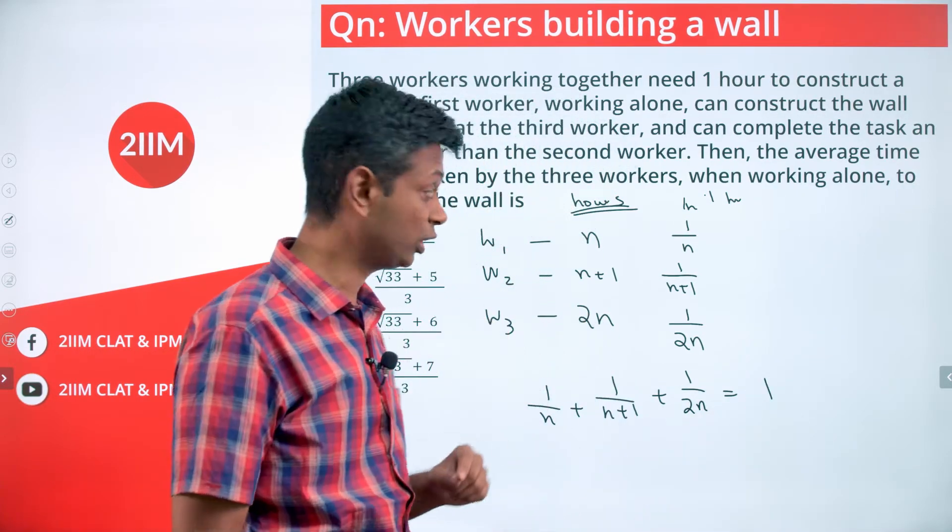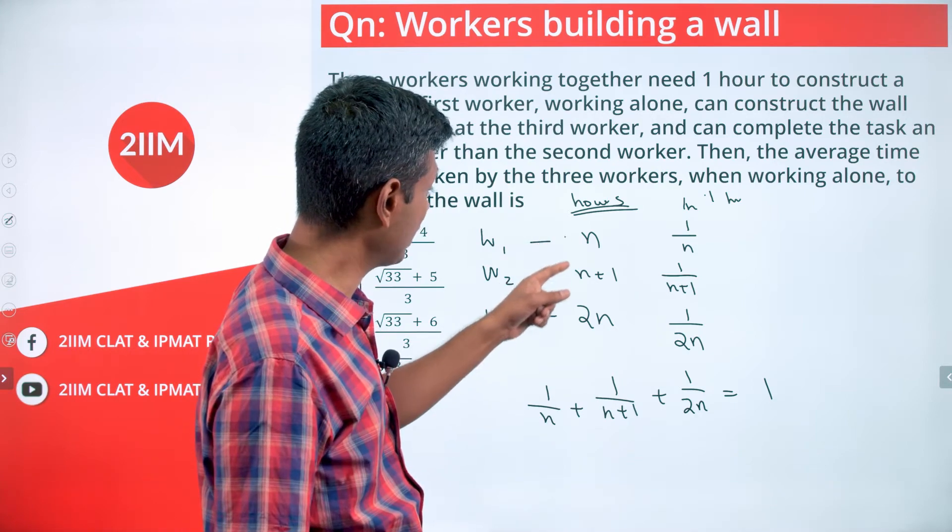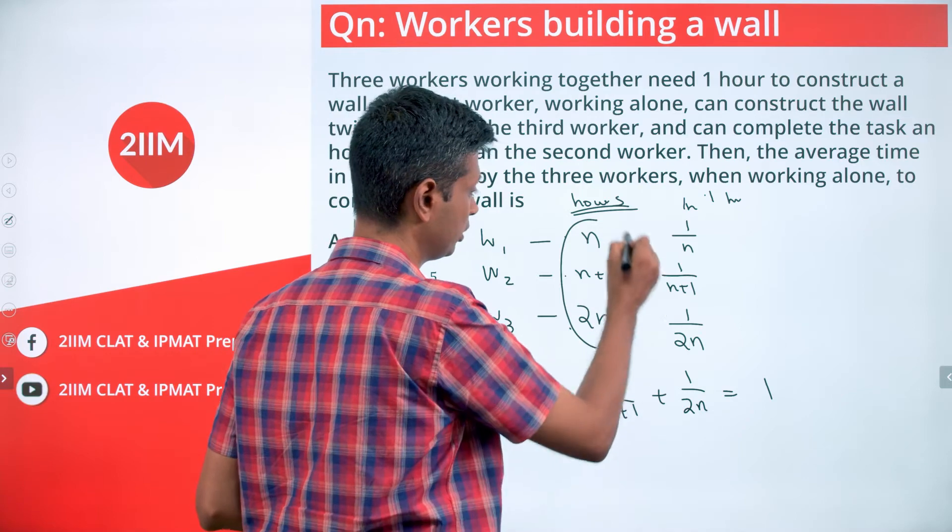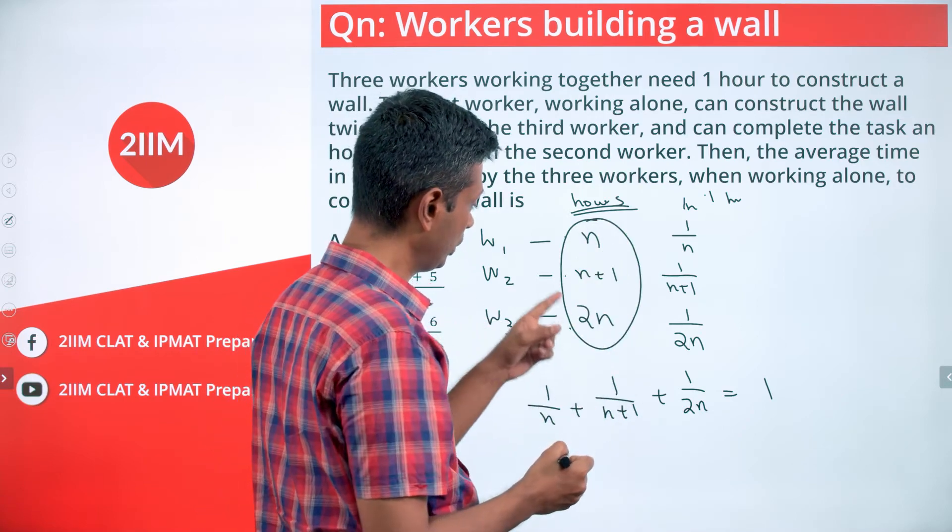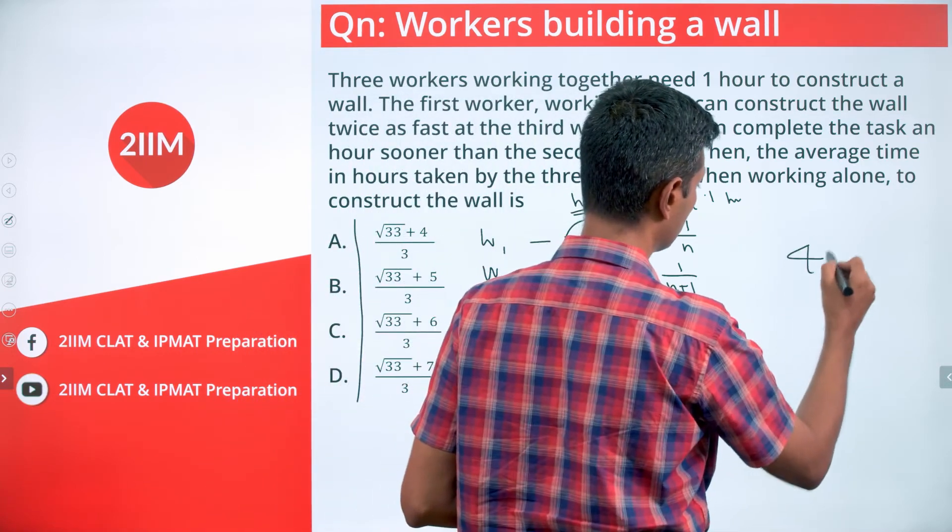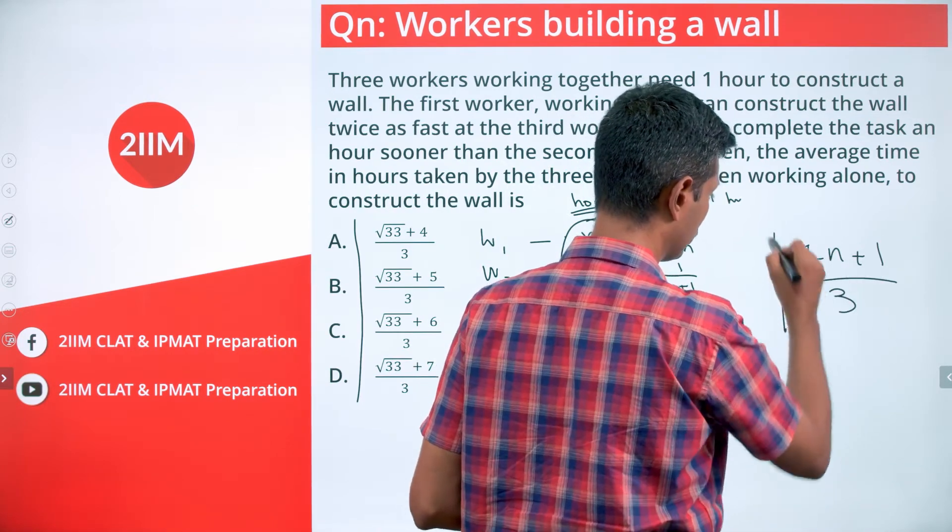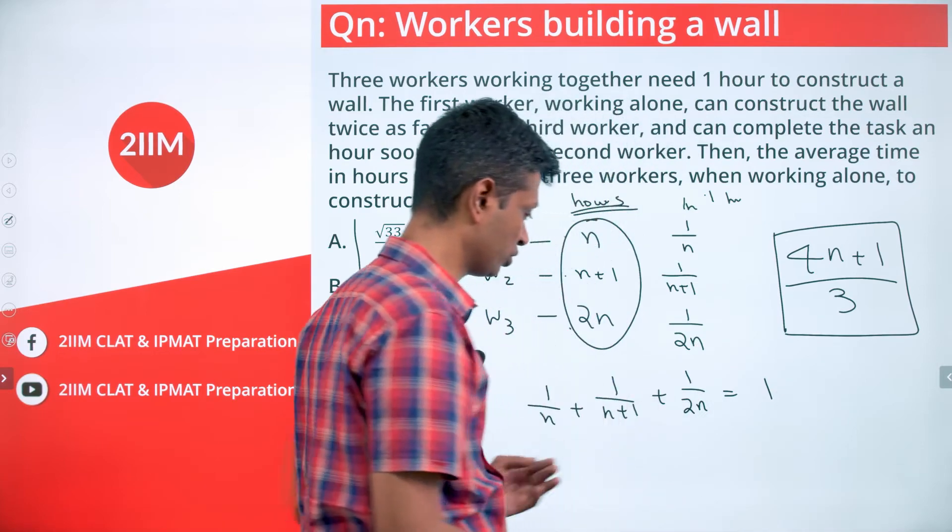And what do we need to find out? We need to find the average of n, n+1, and 2n. Or we need to find (n + n+1 + 2n)/3. That's 4n+1 divided by 3. This is what we need to find out.